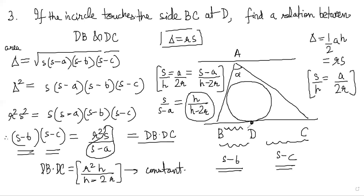Replacing s/(s-a) in our expression, DB times DC equals R² times H divided by (H minus 2R). Notice that R, H are all given in the problem, so this is a constant. DB times DC is a constant depending only on the perpendicular distance H between the lines and the radius R of the incircle. That is an interesting property: DB times DC equals R²H/(H minus 2R).